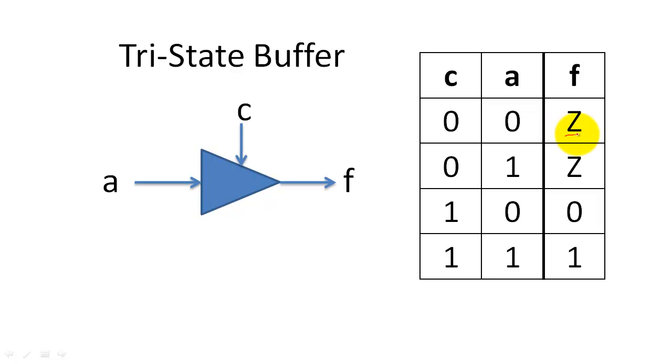The capital Z here symbolizes high impedance or resistance so that very little current will pass through the buffer. The control bit of the tri-state buffer acts as a valve that shuts current on and off from a circuit.